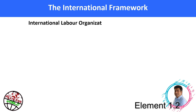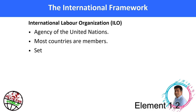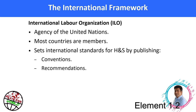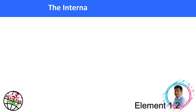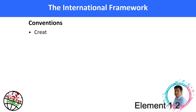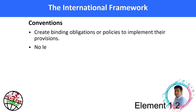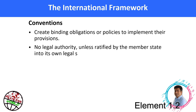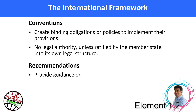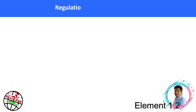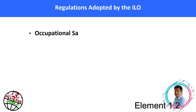Let's learn about the international framework. The International Labour Organization (ILO) is an agency of the United Nations; most countries are members of it. It sets international standards by publishing conventions and recommendations. Conventions create binding obligations or policies to implement their provisions, but have no legal authority unless ratified by the member state into its own legal structure. Recommendations provide guidance on policy, legislation, and practice.